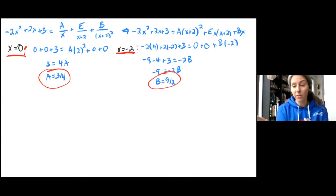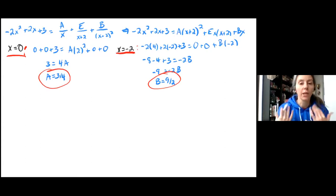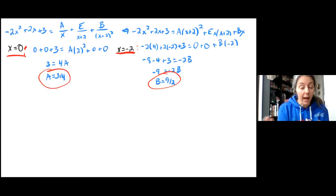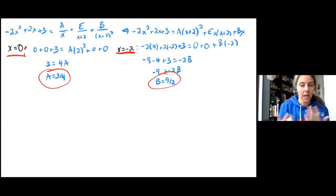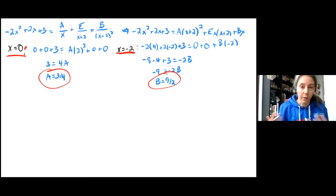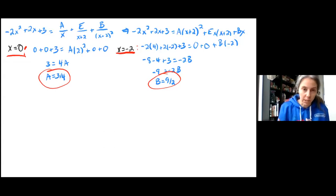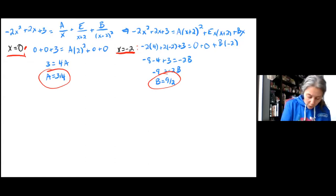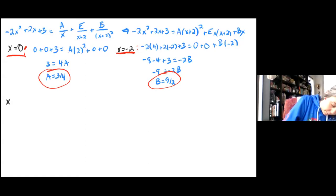I've solved for A and I've solved for B, but I have not solved for E, and unfortunately I don't have any zeros left. So I can pick any number of my choice and plug it in. The ideal number would be zero, but I've already used that, so I have to pick another number. Another number that's really easy to plug in is 1. So we're going to plug in x equals 1.